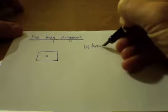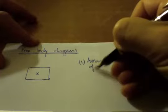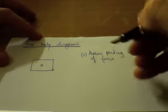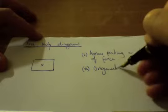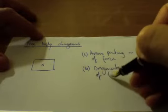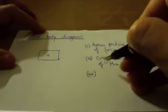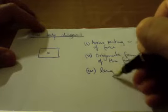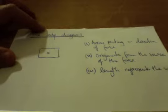One, you require an arrow pointing in the direction of the force. The second one, it must originate from the source of the force. Three, the length represents the size of the force. And then four, just to make it nice and clean, it should be labelled.